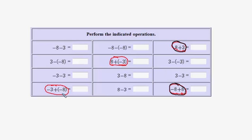To use the real number line to add, you start with the first number. If you're adding a positive, you move to the right. If you're adding a negative, you start with the first number and then move to the left. I've summarized this on the next page.